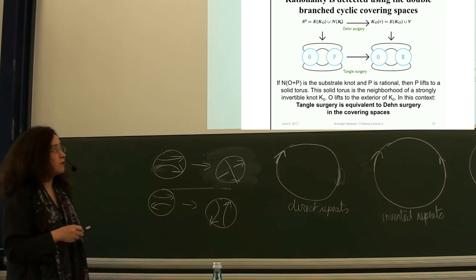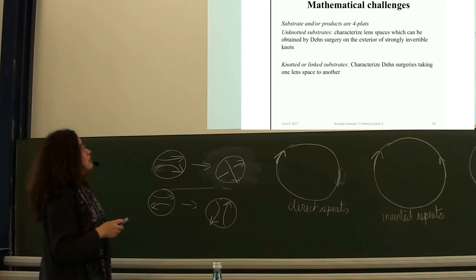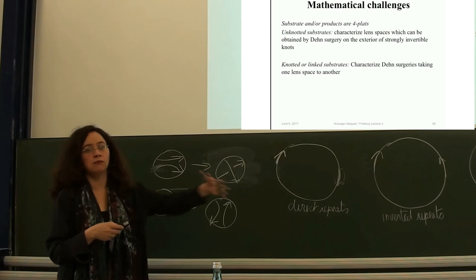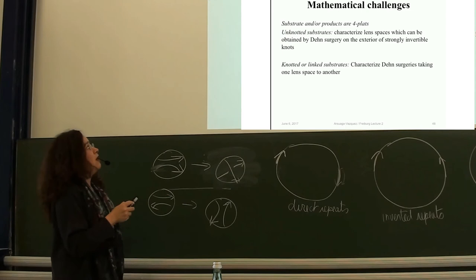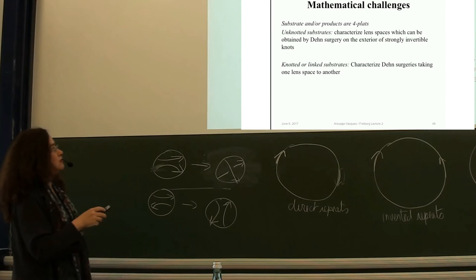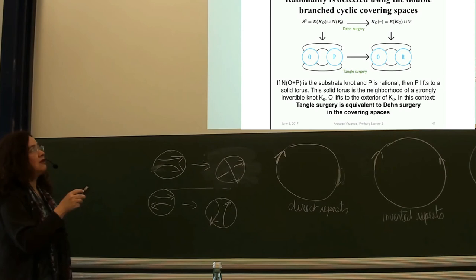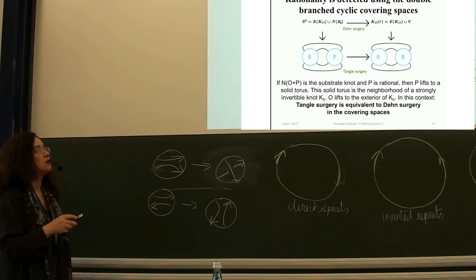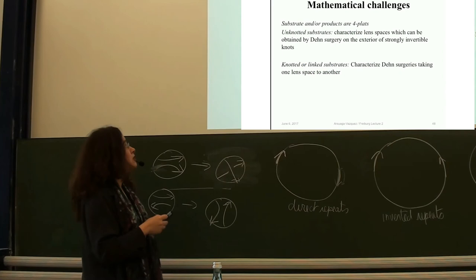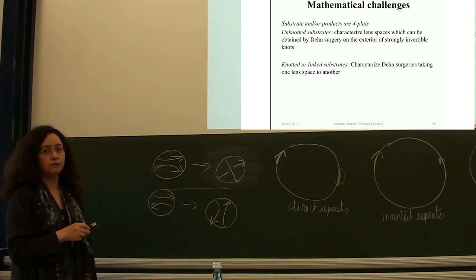The key challenge: if you have a knotted substrate, can we characterize lens spaces which can be obtained by Dehn surgery on the exterior of strongly invertible knots? And if you have a knotted or linked substrate, can you characterize the Dehn surgery? If the substrate is a four-plat or two-bridge knot, it lifts up to a lens space, so you would be dealing with characterizing Dehn surgeries taking one lens space to another. That's a key question. In our pathway, the last three steps went from trefoil to Hopf link to unknot to unlink, and we pinpoint results in low-dimensional topology that allow us to say the tangles are rational for these cases.